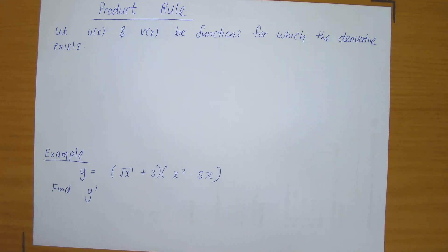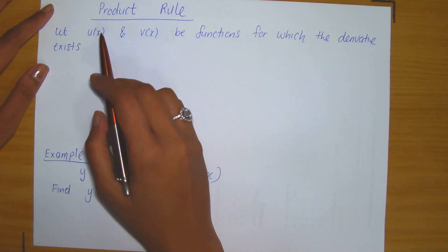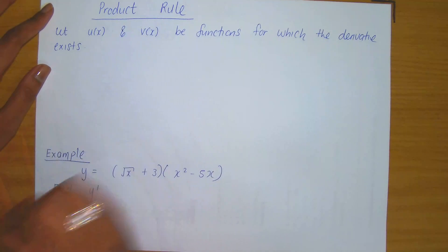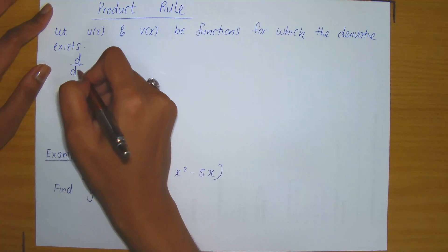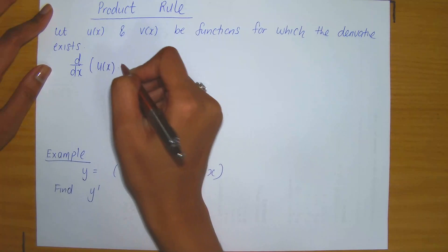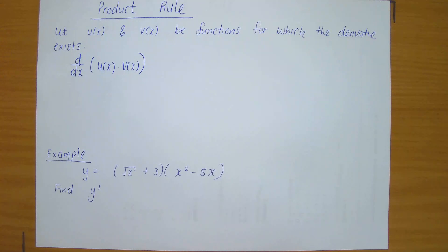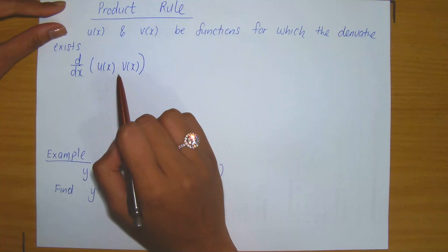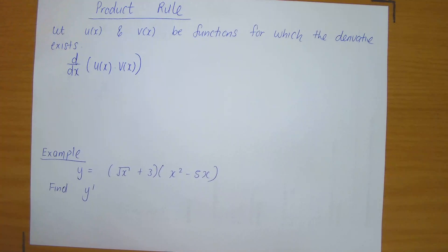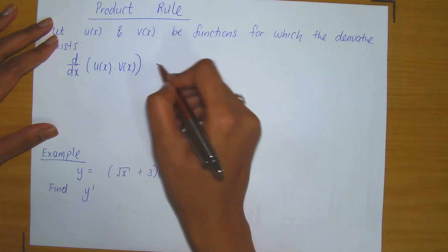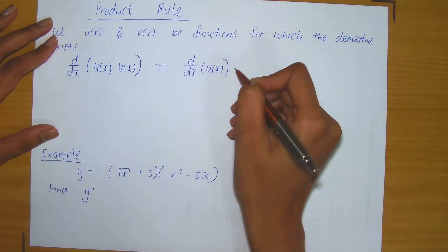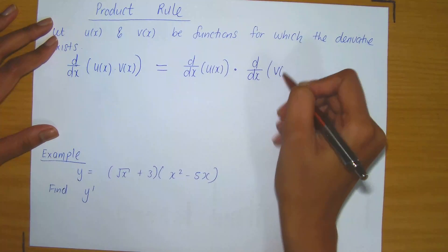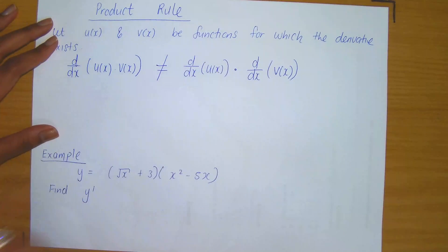With regards to the product rule, suppose that you were given two functions — we'll call them u of x and v of x — and suppose that both of these functions are differentiable. What happens if I then ask you to compute the derivative of the product of these two functions? One would perhaps expect that the derivative of the product is equal to the product of the derivatives, meaning the derivative of the first function multiplied by the derivative of the second function. However, that is not the case.